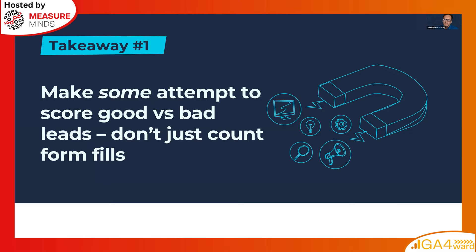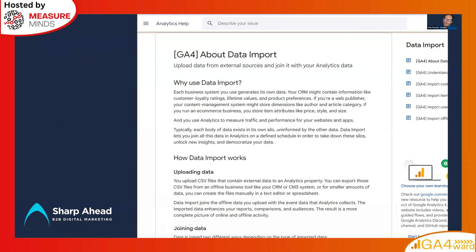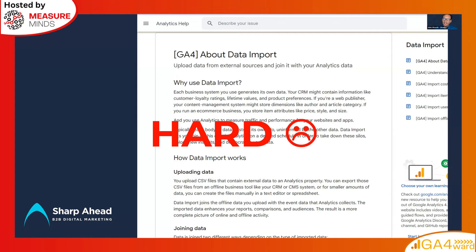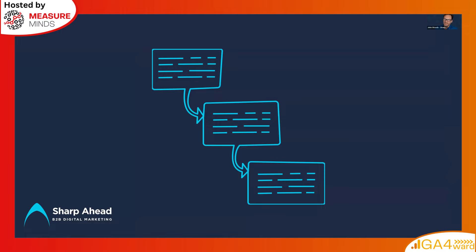That might sound awful, but it can be fine because unicorns are really valuable — some clients have customer lifetime values in the millions of pounds. If you spend a few thousand pounds, 20 people fill in a form, and only two are real business prospects worth a million pounds each, your advertising is extremely successful. The point is that eight donkeys and two unicorns is not eight unicorns. If you're going to measure leads using GA4 or any tool, you need to make some attempt to separate the good ones from the bad ones.